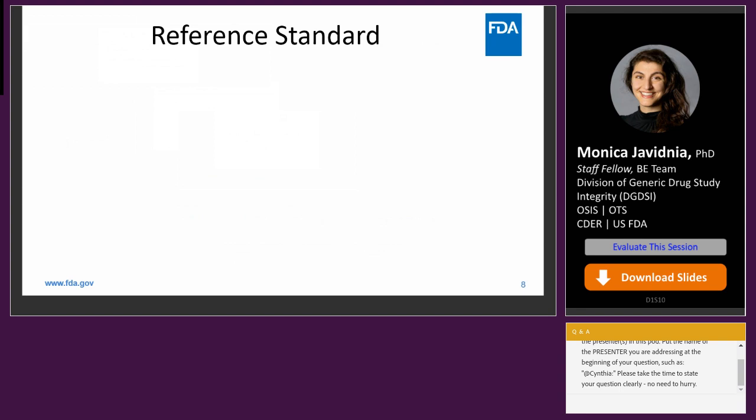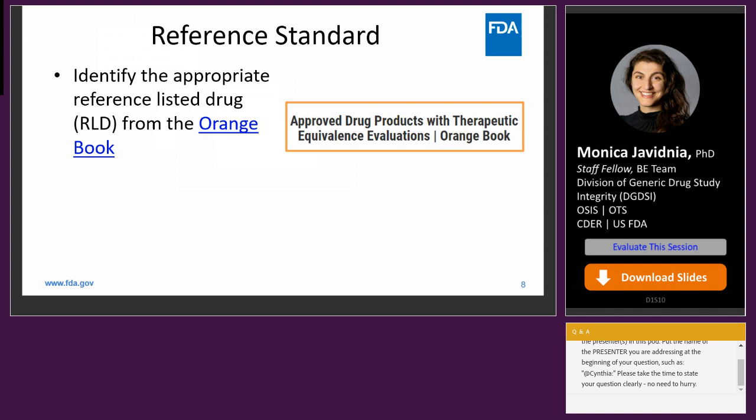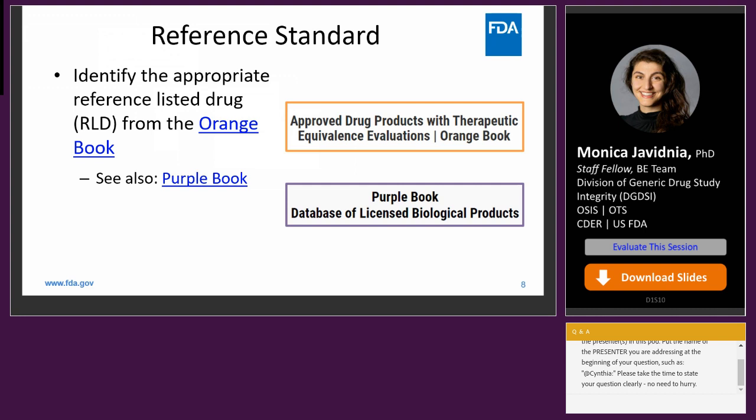A key component of BE studies is the comparison of the test product to the reference standard. The Orange Book is an important resource for identifying the appropriate reference-listed drug for in vitro BE studies. Similarly, the Purple Book details biological products and can be used for biosimilar development and to identify interchangeable biologics. If the reference-listed drug is no longer available — for example if it's no longer marketed or there's a shortage — FDA may select a different drug to serve as the reference standard.